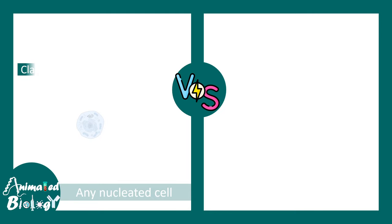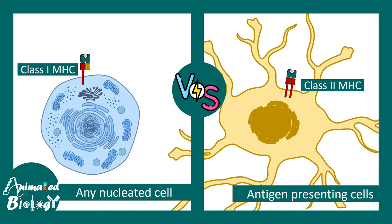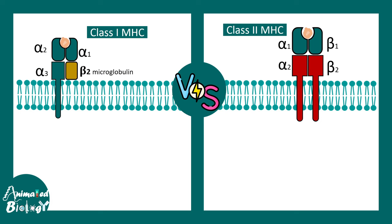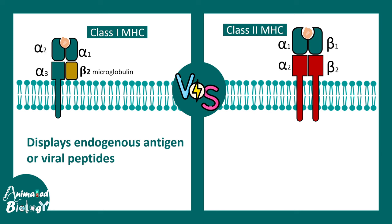There are two categories of MHC: class 1 MHC, which is found in any nucleated cell, and class 2 MHC, which is found in antigen presenting cells like dendritic cells. Class 1 and class 2 MHC molecules differ in terms of their structure and the type of antigen they display on their surface. Class 1 MHC displays endogenous antigen or viral peptides.